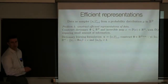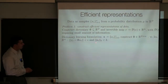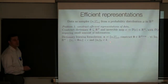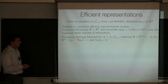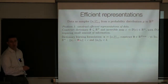The zero norm of alpha_i — that's the number of non-zero entries in alpha_i — should be small. That says that in representing every data point, I want to use only a small number of the dictionary elements.